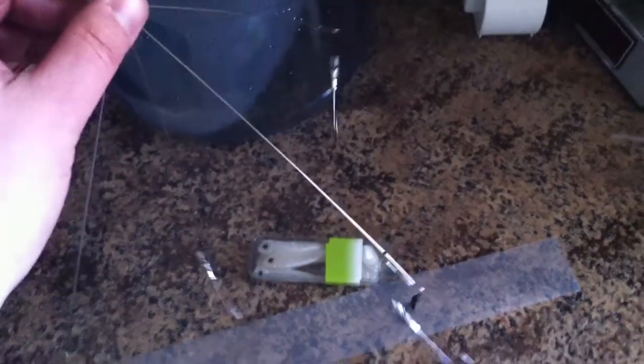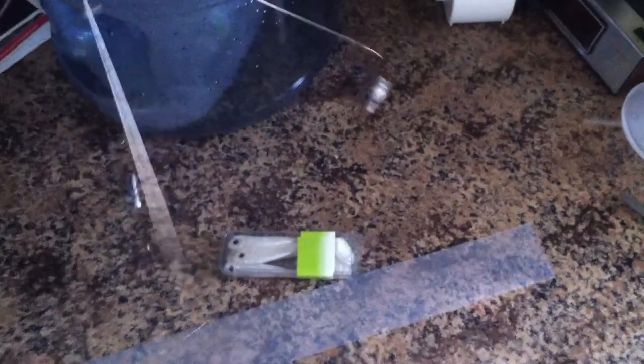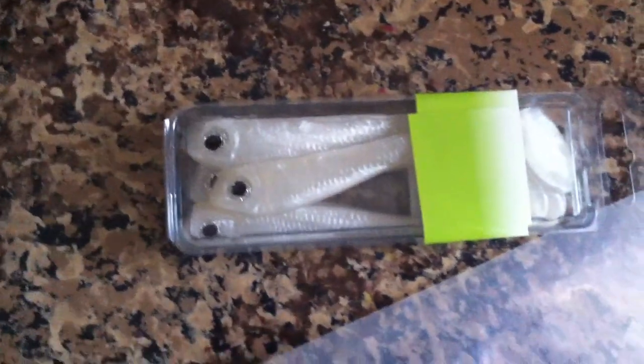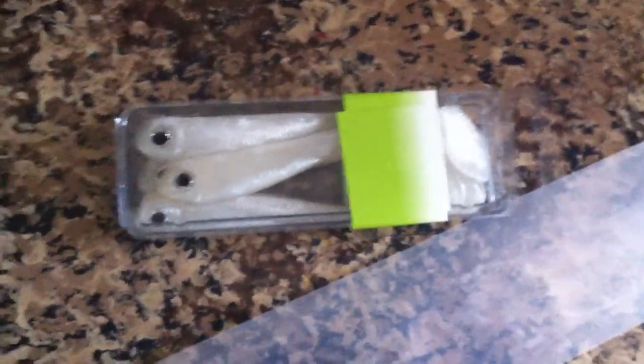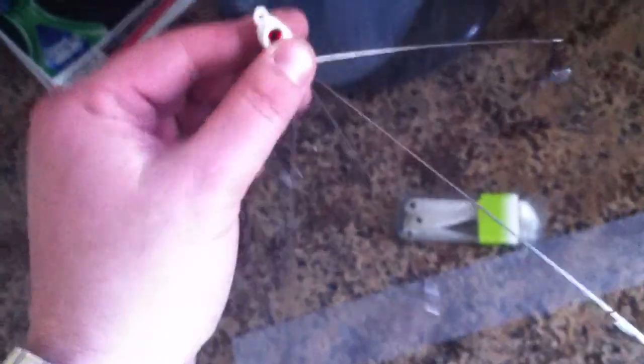Okay, so now all the jig heads, or swim bait heads are on. You're ready for your paddle tail swim baits, which, you know, really, pearl is a hard-to-beat color. It's going to work in any type of water situation. And there you have it.